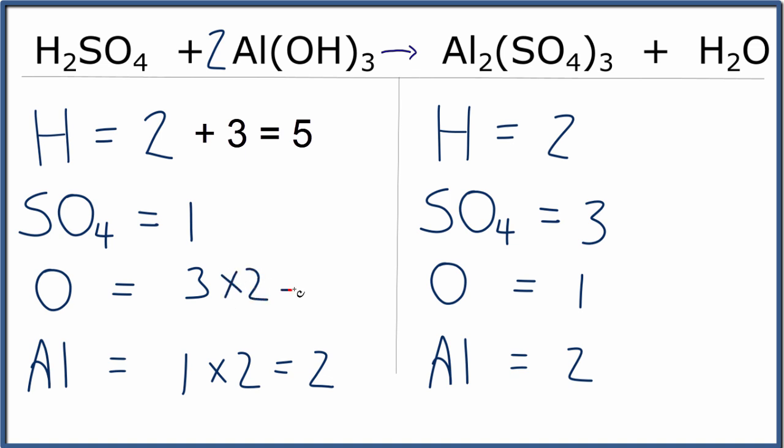So three times two, that'll give me six oxygen atoms. And then for the hydrogens, we'll need to add these two, plus we have the three times the one, three times two is six. So we'll have eight hydrogen atoms.